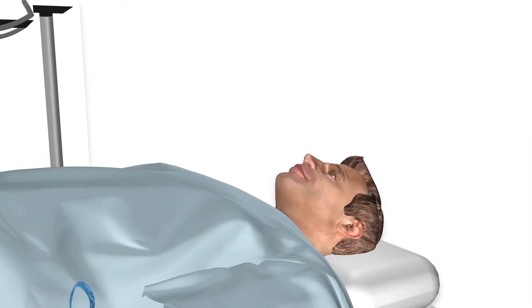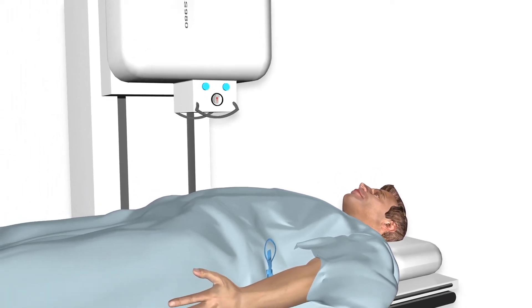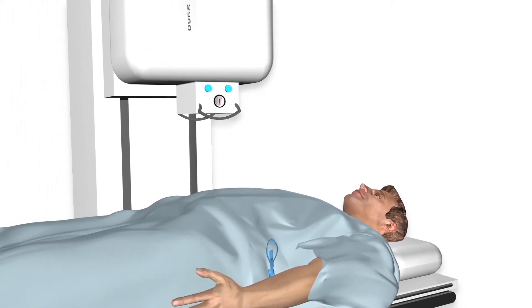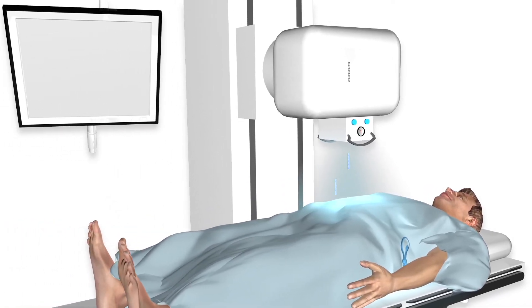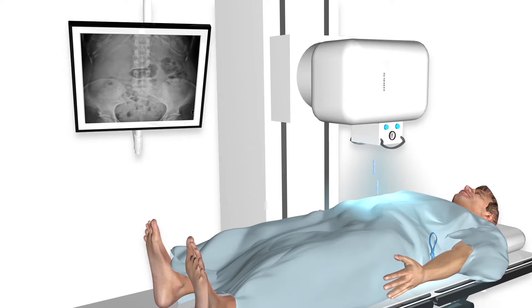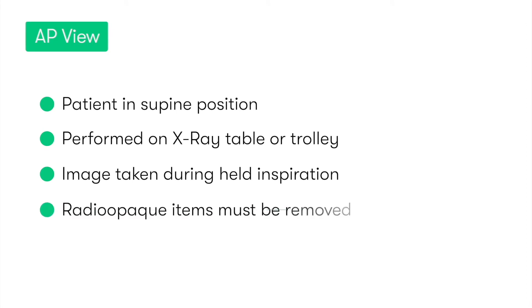The anteroposterior, or AP view, basically involves the patient lying flat on their back on the x-ray table or a trolley, with the x-ray beams being fired from front to back. To get the best image, we need to ensure that the patient holds their breath as the image is taken, to prevent any blurring caused by movement. We also need to make sure that any radio-opaque items, such as belts with metal fastenings, are removed prior to the x-ray being performed, as otherwise they may obscure underlying structures and reduce the quality of the end image. So it's not uncommon for a patient to be made to wear a gown whilst the x-ray image is taken.